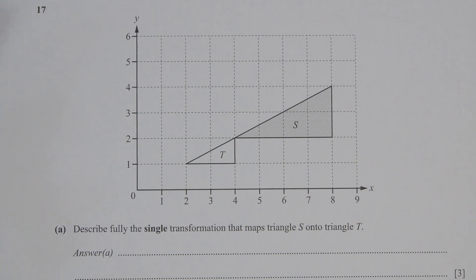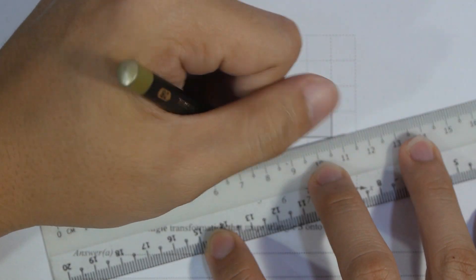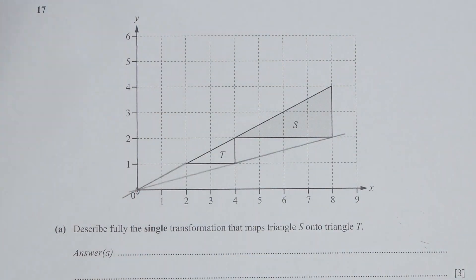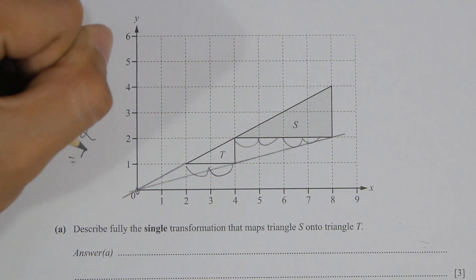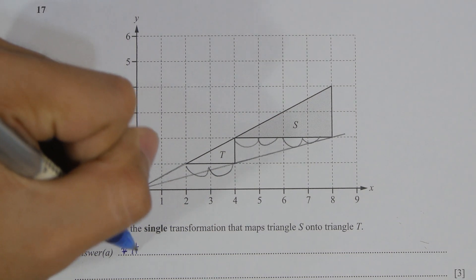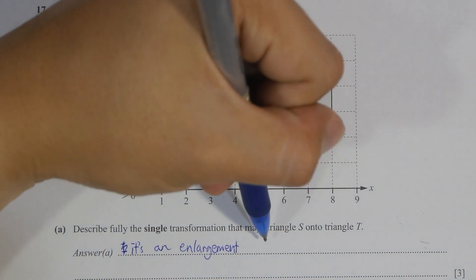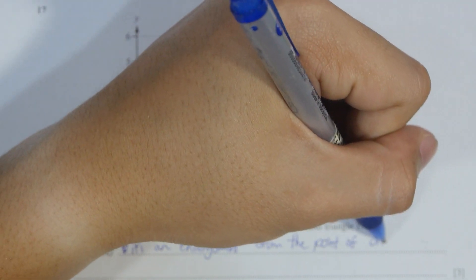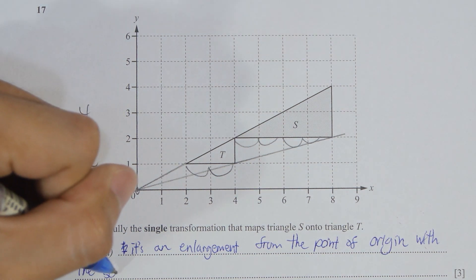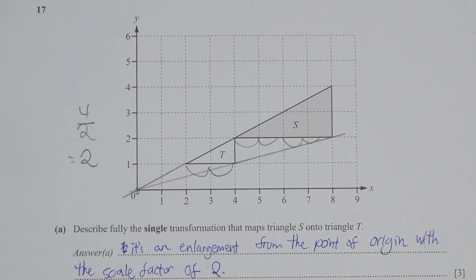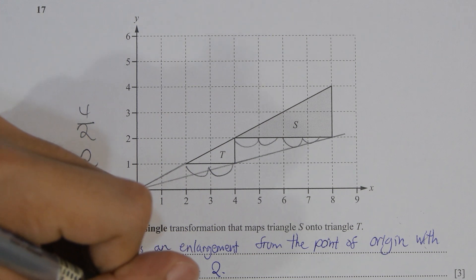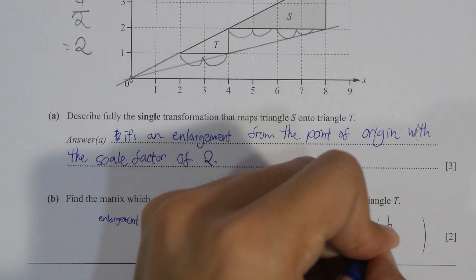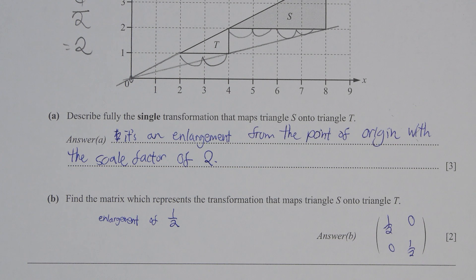For question 17 part A, I actually made a mistake — I treated the question as from triangle T to triangle S instead of what was being asked. This was pointed out by one of our viewers. To correct it, the only mistake is the scale factor value, which will actually be one half, because 2 over 4 equals 1 over 2. For part B, finding the matrix which represents the transformation from triangle S to triangle T, this part is actually correct.